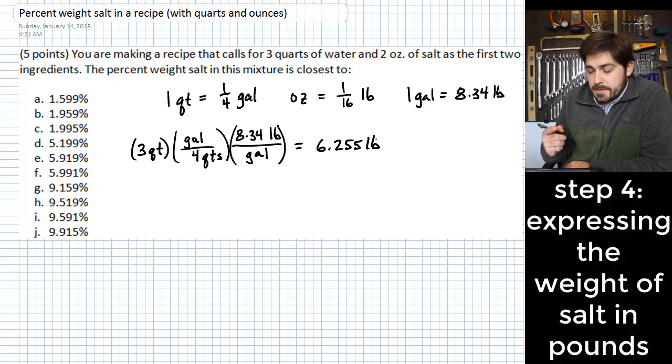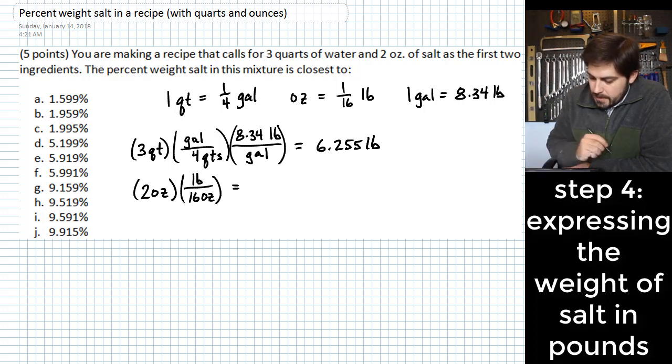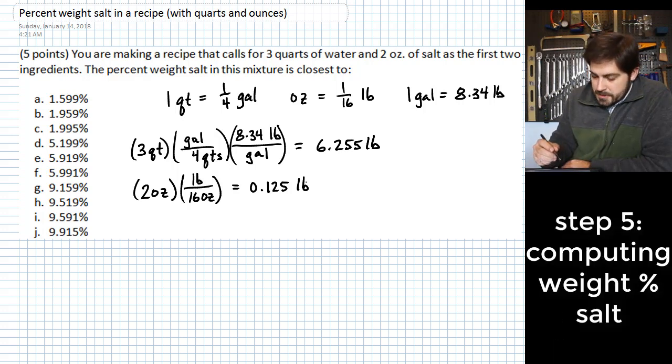So the next thing we need to know is what is two ounces of salt expressed in pounds. And this is so we can get both the amount of salt as well as the amount of water expressed with the same weight units. So two ounces, and I'll multiply this by a pound per 16 ounces. This is one eighth of a pound, or if we want to express that as a decimal, it's 0.125 pounds. Okay, so these are the two weights that we have of our two components. Next we need to express this weight percent.